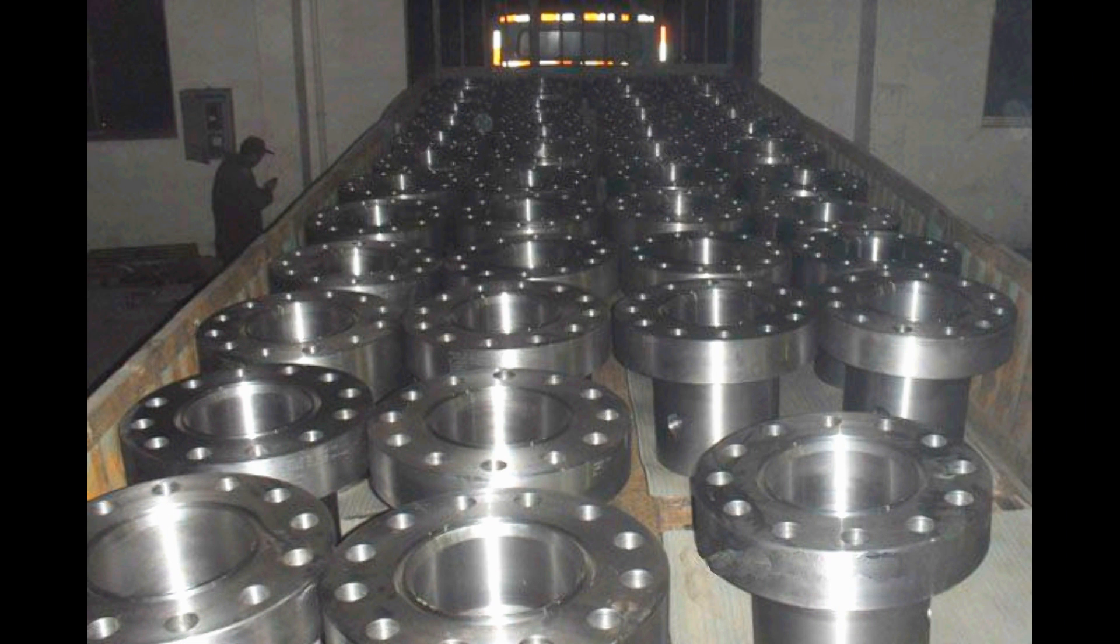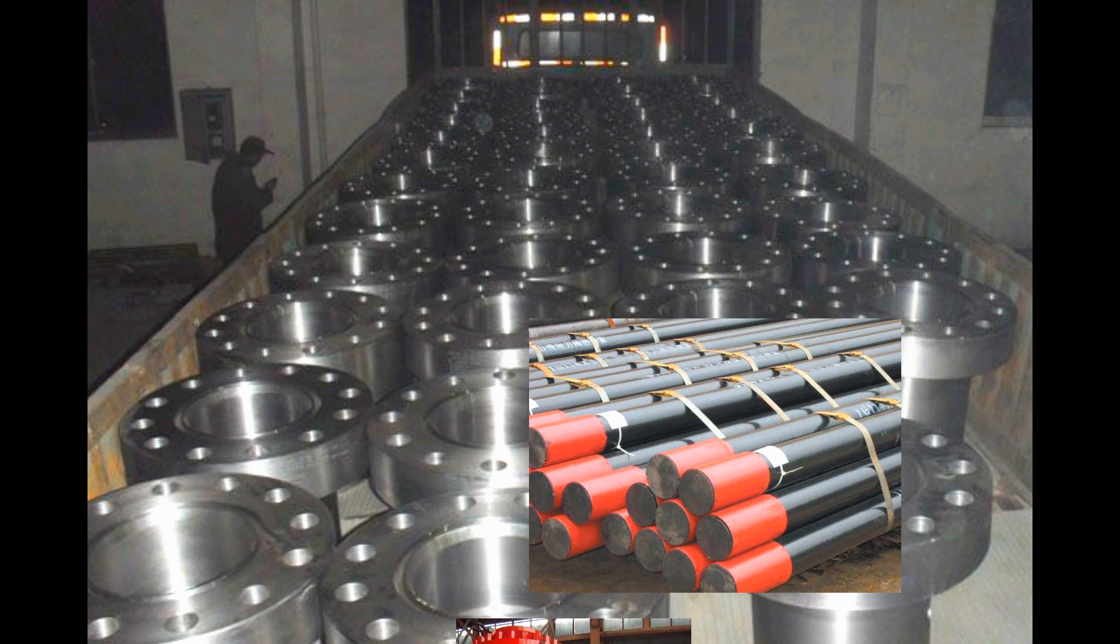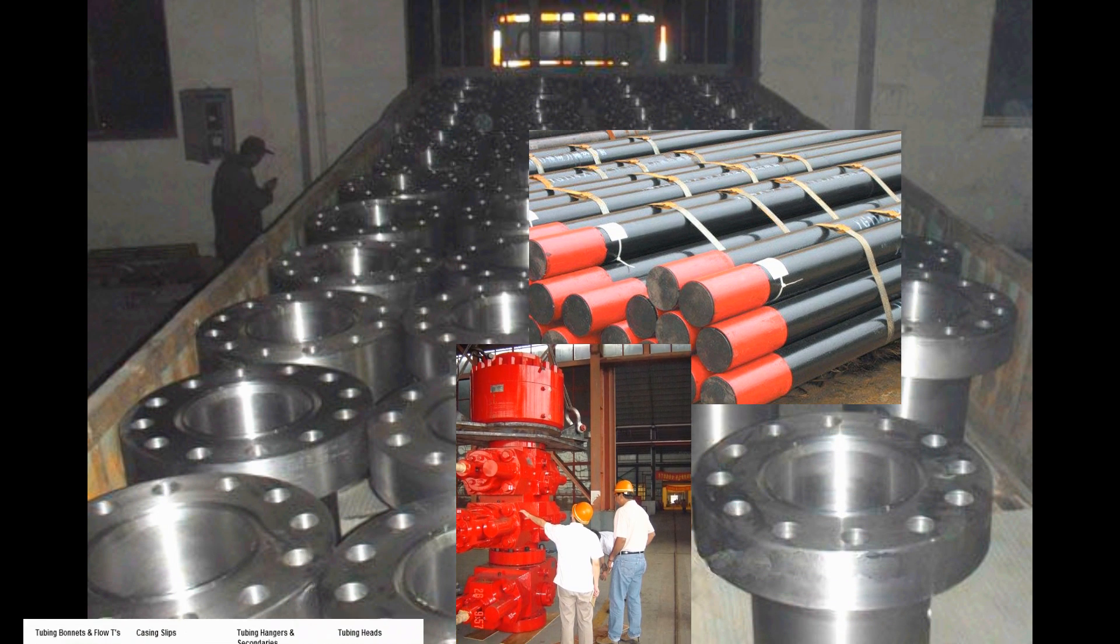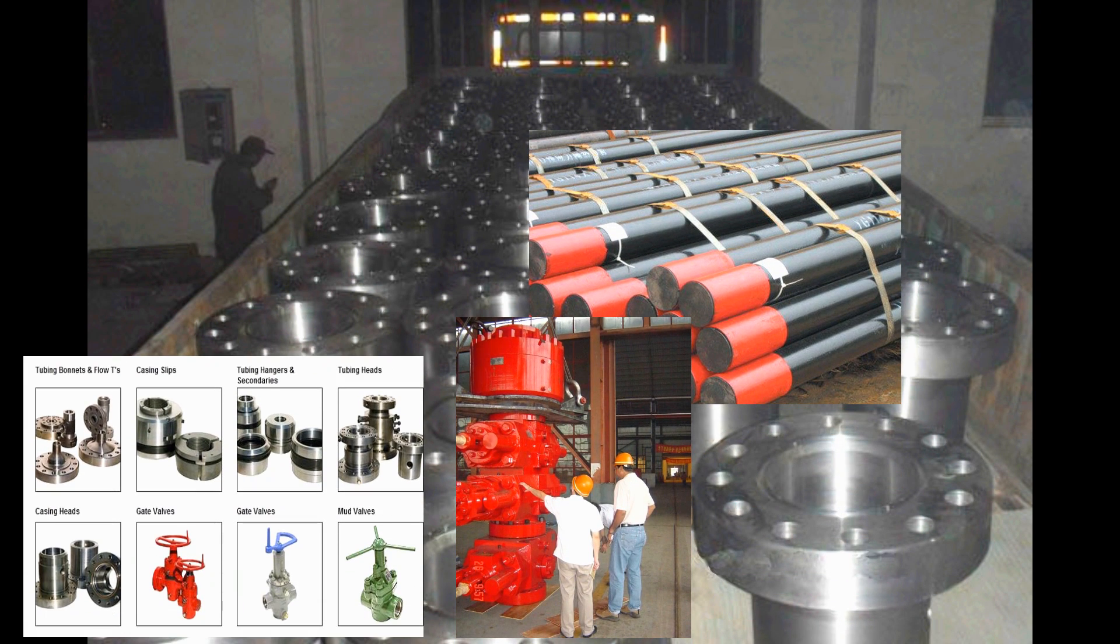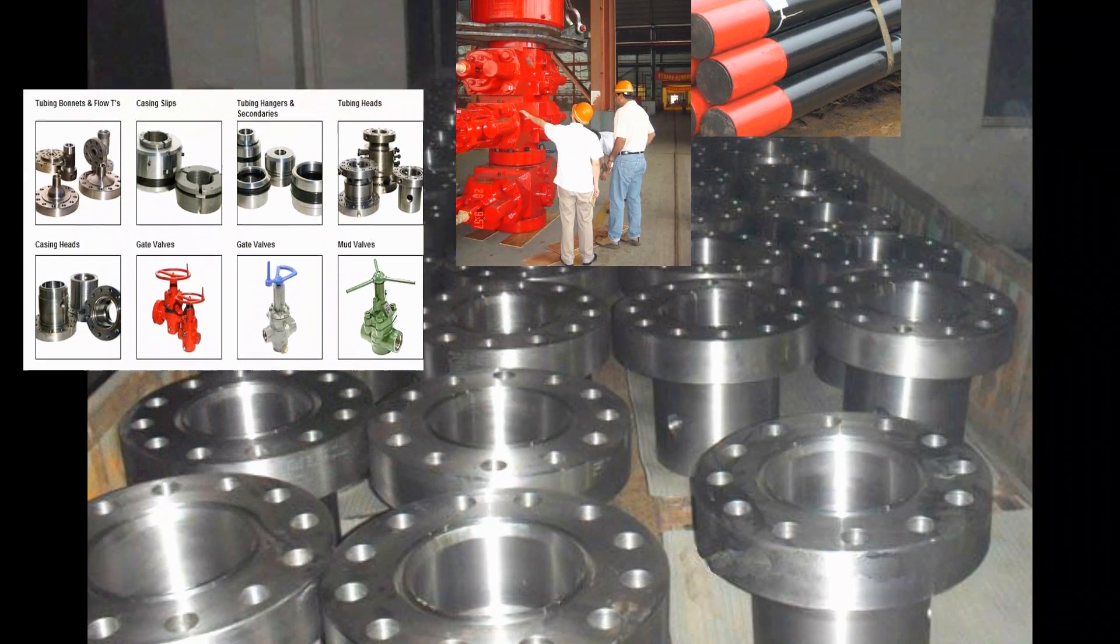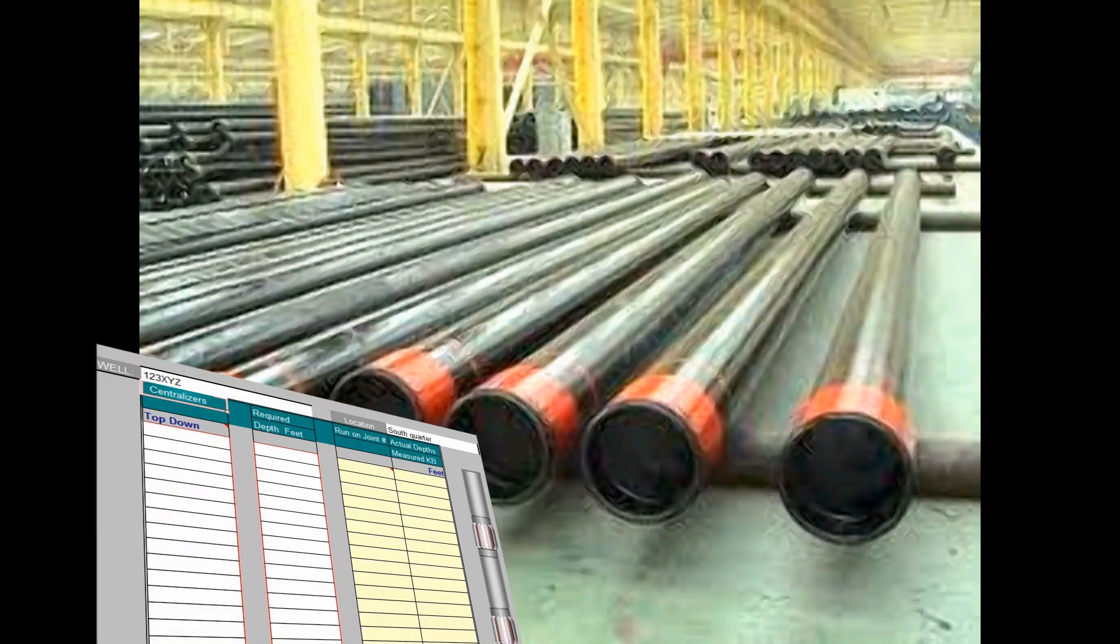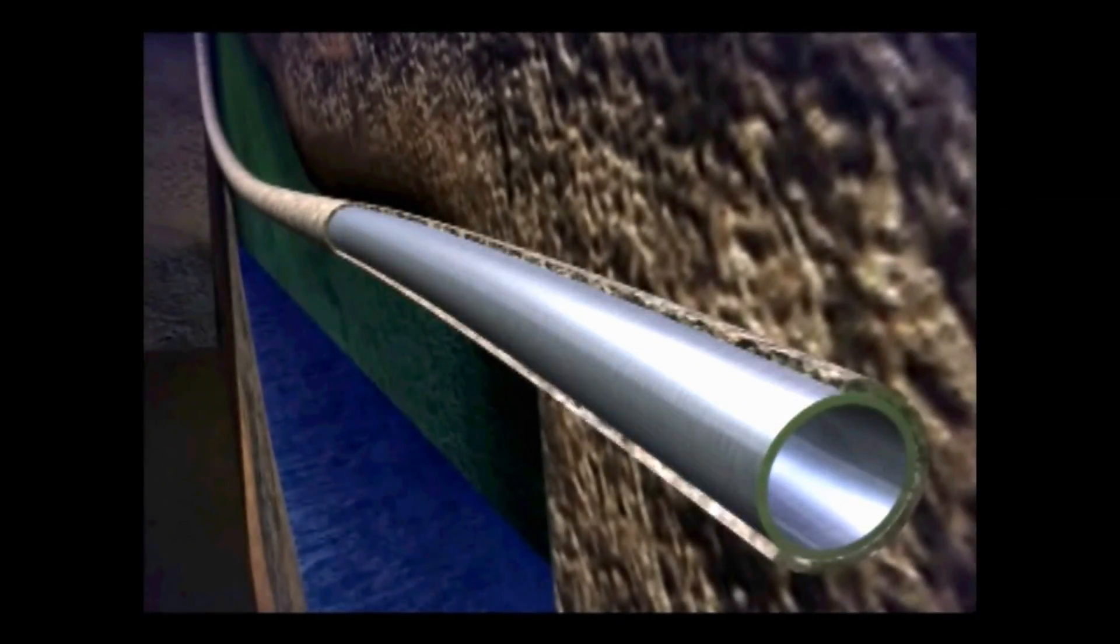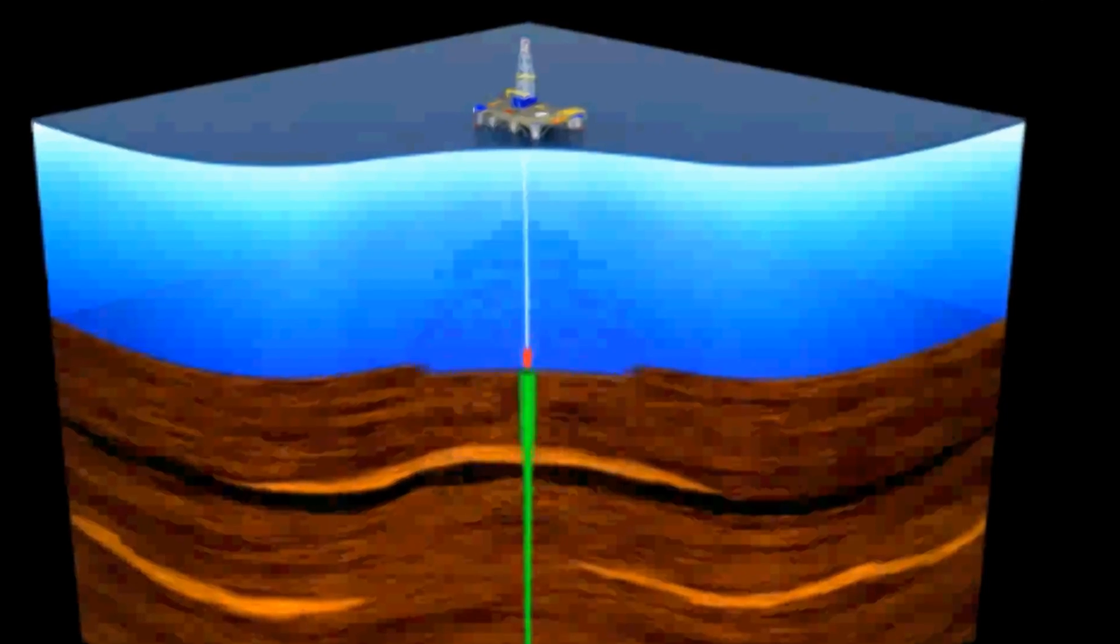As you can imagine, casing and its different components can be very expensive, so choosing the correct equipment for the depth and pressure of the well is very important. It is usually up to the drilling team to calculate the least expensive casing that is capable of safely and adequately encasing the well so fluid can flow freely while containing the pressure that could lead to dangerous blowouts.